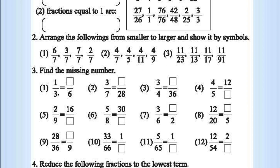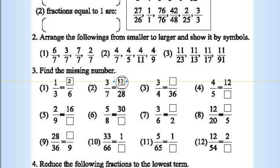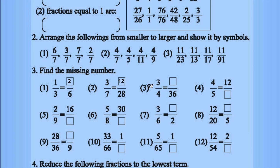Find the missing number. If you multiply 3 by 3 by 2 you will get 6, so 1 times 2 is 2 — the missing number is 2. 2 by 6 is equivalent to 1 by 3. 7 fours are 28 and 3 fours are 12, so the missing number is 12. 4 nines are 36 and 3 nines are 27, so 27 is the missing number.